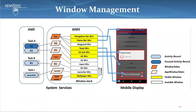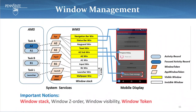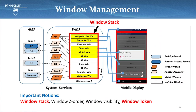Windows are managed by WMS, or Window Manager Service, and they are also arranged in a stack called the window stack. Windows are ordered in this window stack by a numerical value called z-order. The higher the z-order value, the higher the position the window will be placed in the stack. If two visible windows overlap, the one residing higher in the stack overlays on top of the other. For instance, the navigation bar and status bar residing at the top of the stack will always be visible, whereas the wallpaper sitting at the bottom will not be shown unless no other window is taking those pixels.